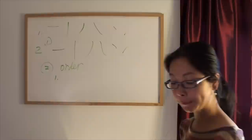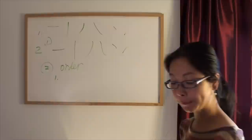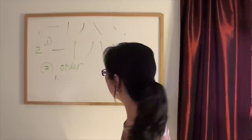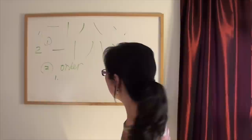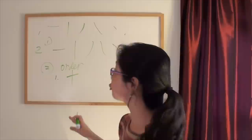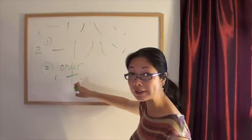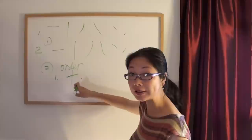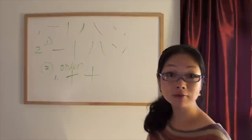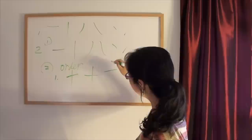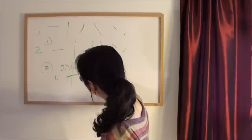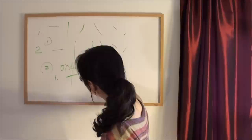The first rule is: horizontal should go before vertical. This character means the number 10. So you cannot write the vertical stroke first — that is totally wrong. Horizontal should go before vertical.